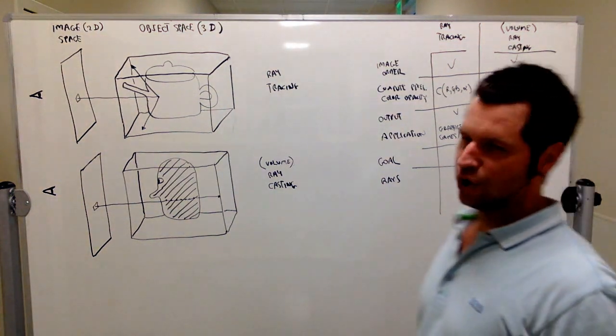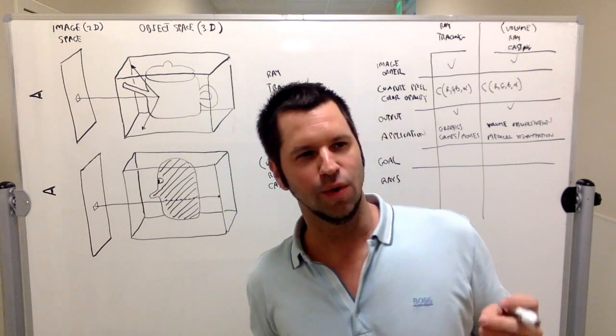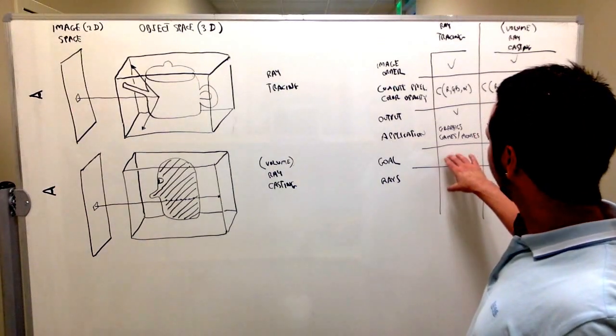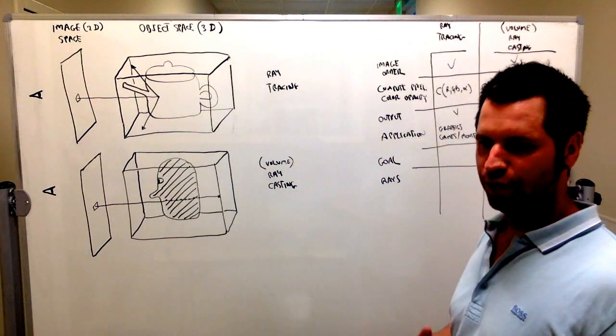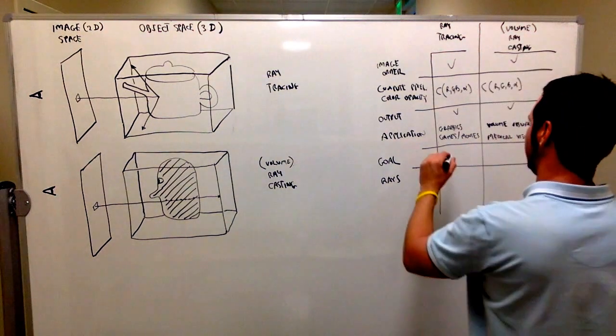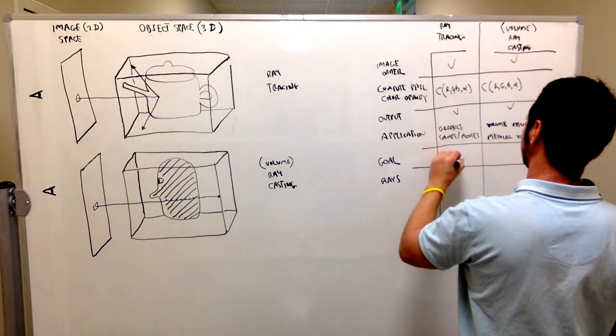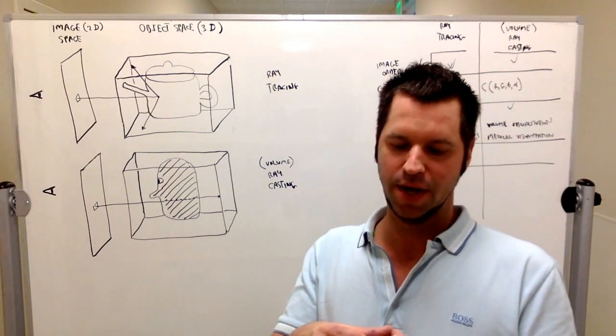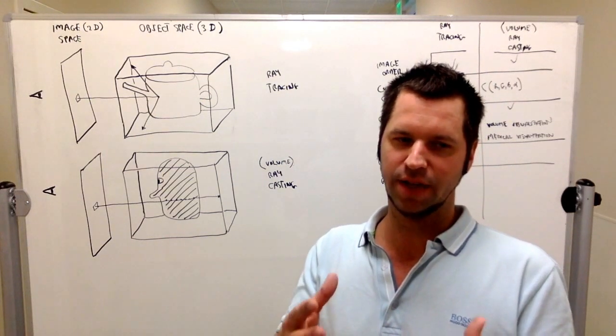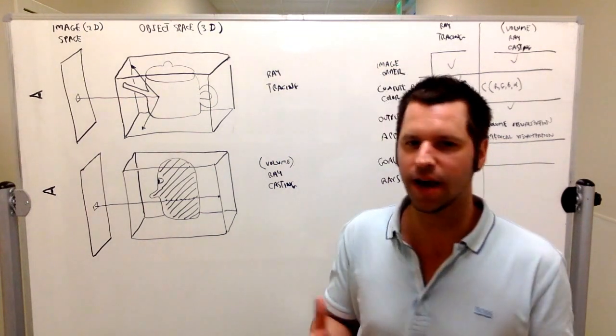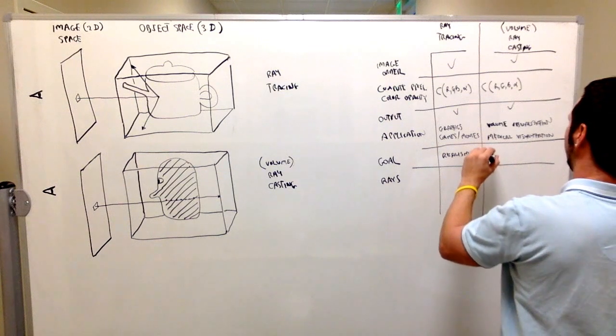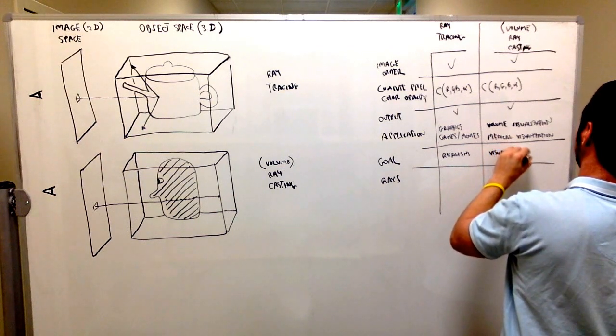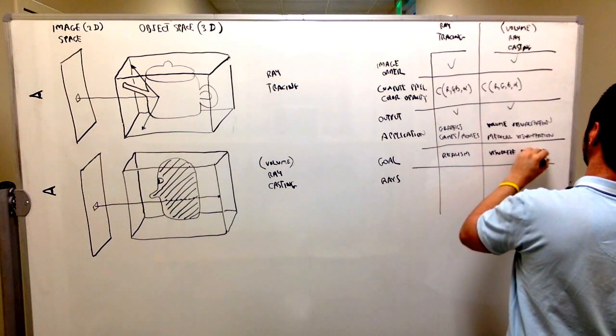The goals of ray tracing and volume ray casting are different. The goal of ray tracing is usually to compute a realistic scene or realistic image, whereas in volume ray casting, that might not be the goal. It's to visualize the details or features inside a volume, and they're 3D.